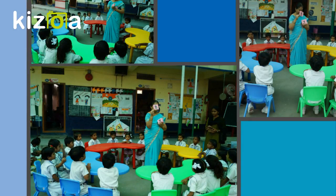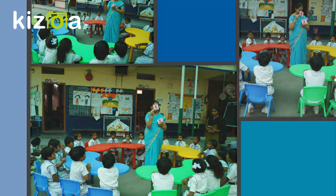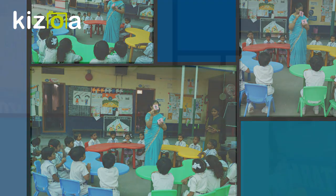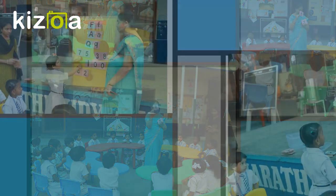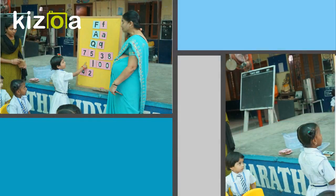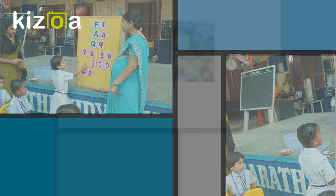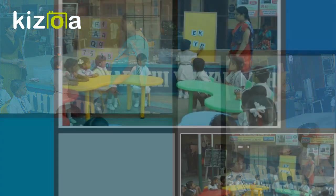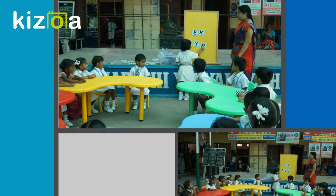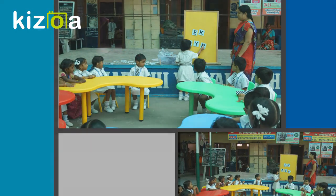A is for apple, a-a-apple. B is for ball, b-b-ball. C is for cat, c-c-cat. D is for dog, d-d-dog.